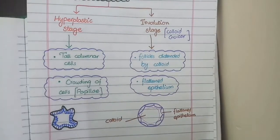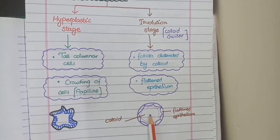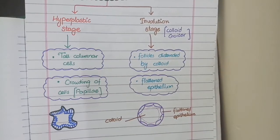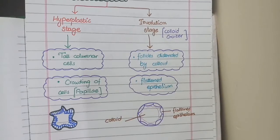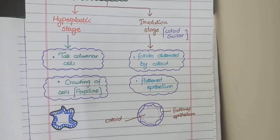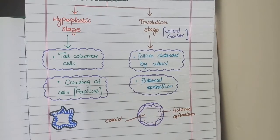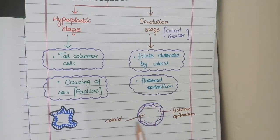The second stage of diffuse goiter is involution stage. In involution stage, the thyroid follicular cells become inactive and they stop making thyroid hormone from colloid. As the follicular cells are not using colloid to make thyroid hormones, colloid accumulates and causes distension of follicles. This colloid also compresses the lining epithelium and the epithelium becomes flat. So overall you see distended follicles with flat lining epithelium.